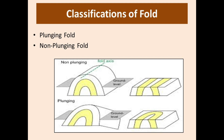Then plunging and non-plunging folds. A plunging fold is one in which the axis of fold is inclined and the hinge line is also inclined. In a non-plunging fold, the hinge line is horizontal and the axis of fold is also horizontal.